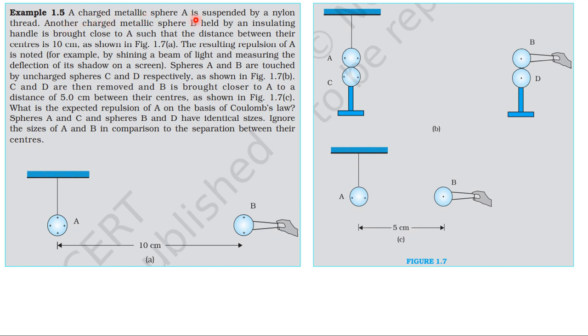A charged metallic sphere A is suspended by a nylon thread. Another charged metallic sphere B held by an insulating handle is brought close to A, such that the distance between their centers is 10 cm as shown in figure 1.7A. The resulting repulsion of A is noted, for example by shining a beam of light and measuring the deflection of a shadow on a screen.